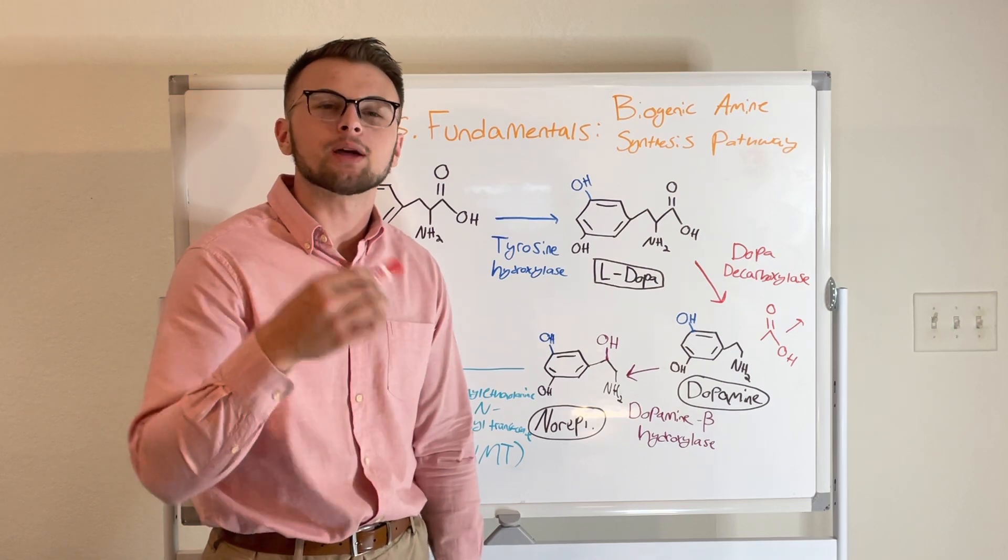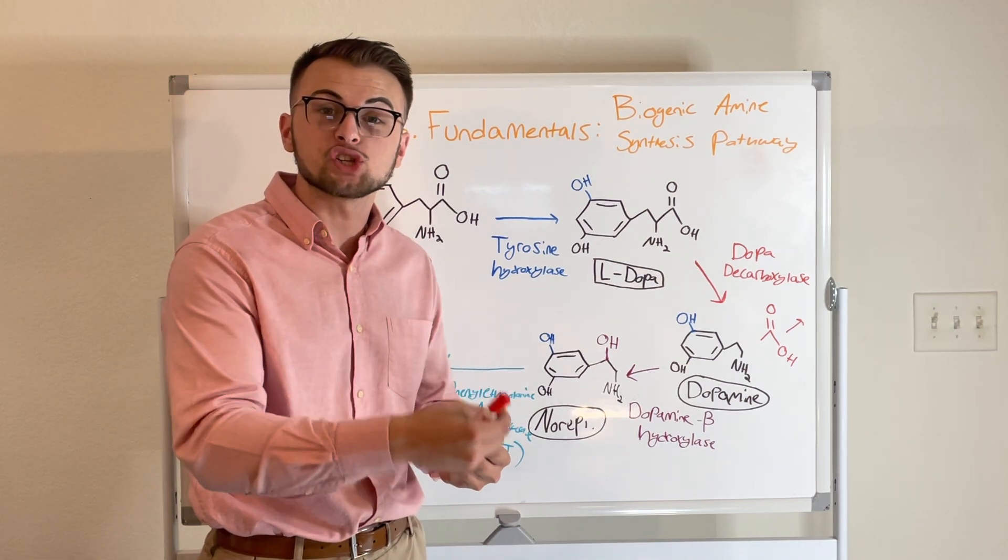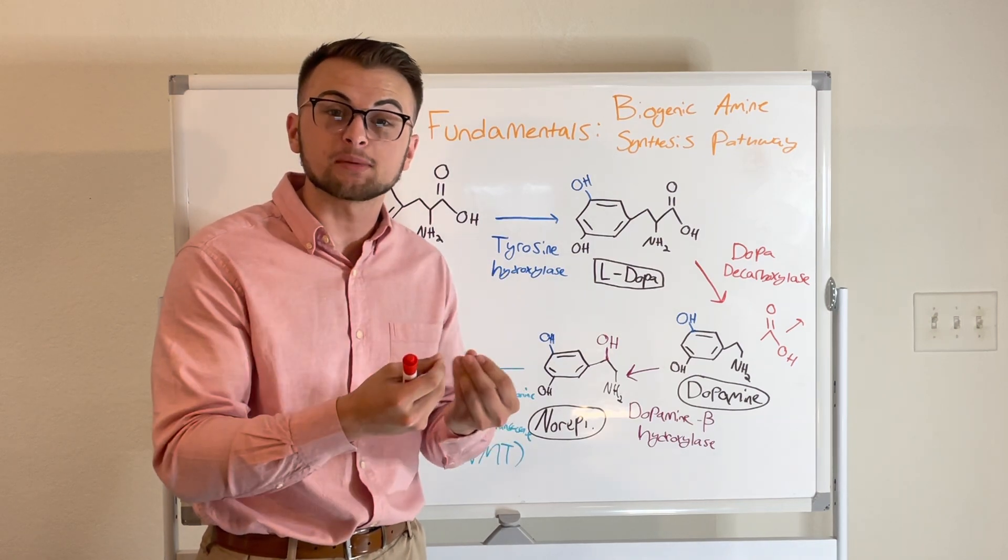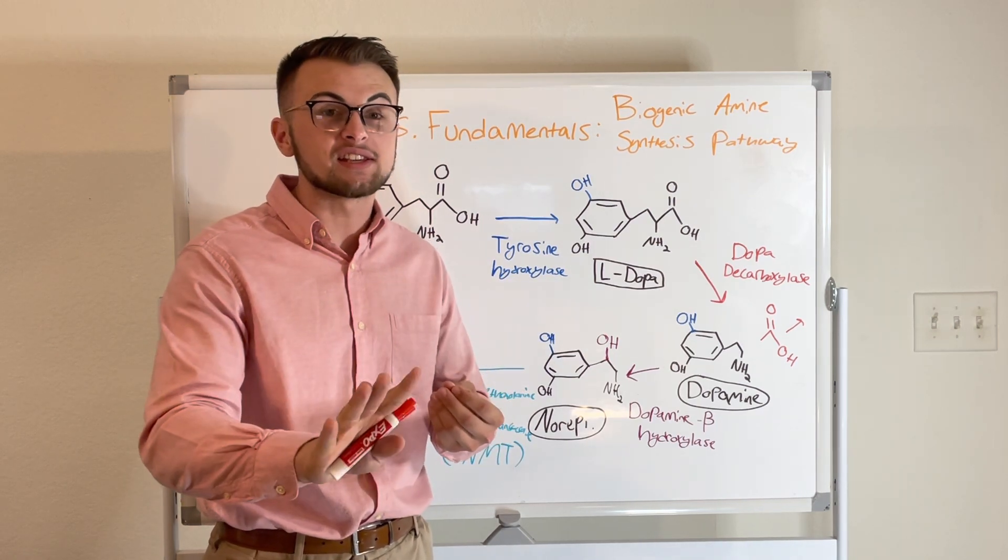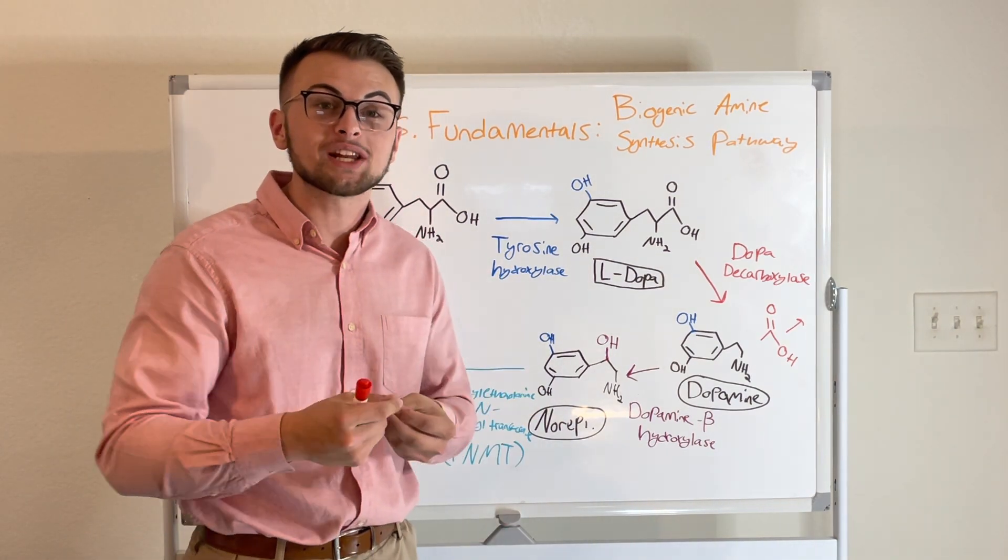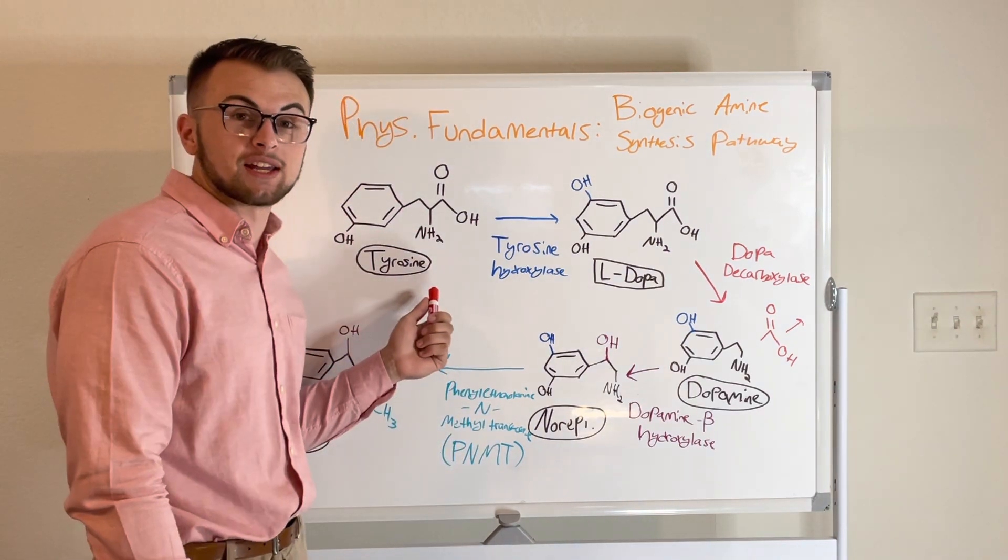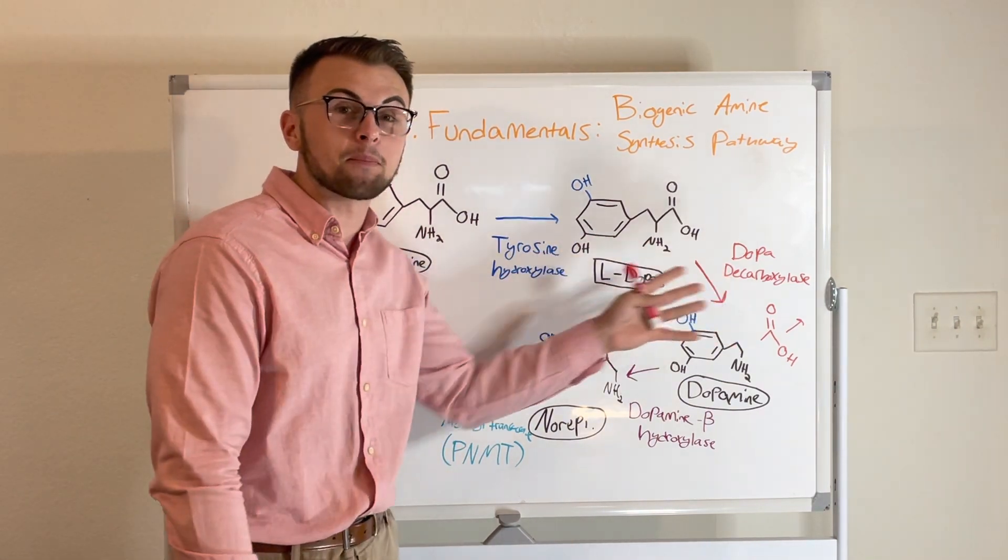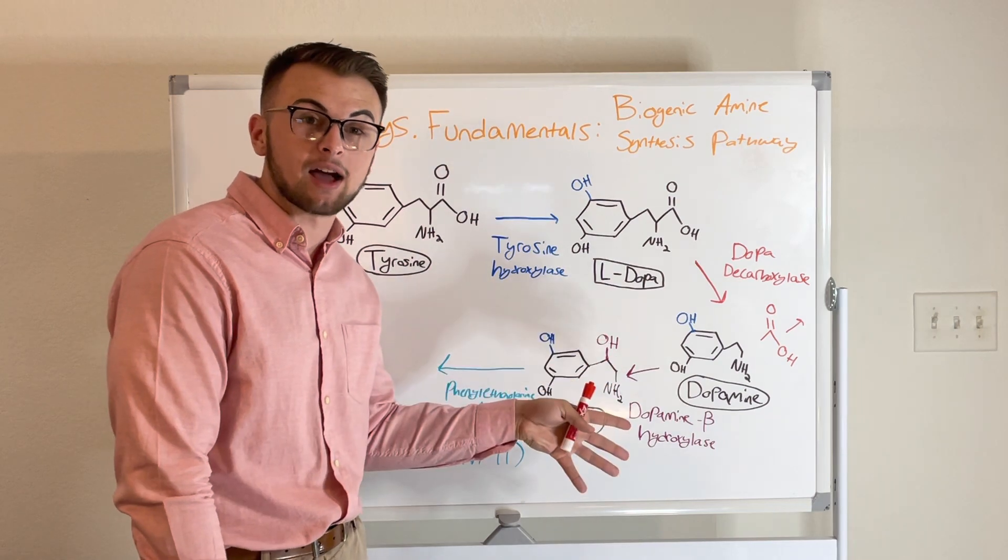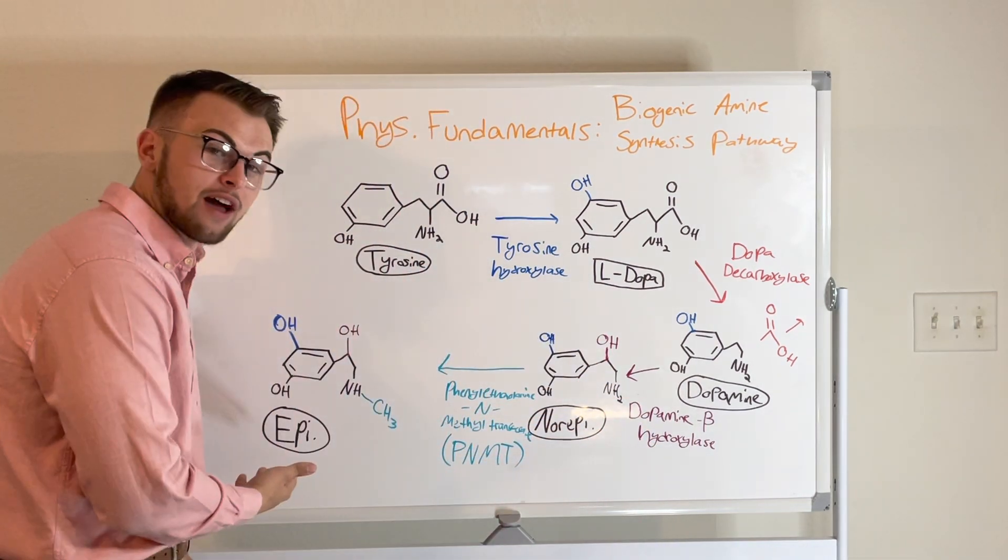This pathway is very important to understand because it is likely that we will give our patients drugs that have these substances in them or at least substances that try to mimic them. Our Biogenic Amine Pathway will begin with Tyrosine and by cutting and pasting from different enzymes we will arrive at our final product of Epinephrine.